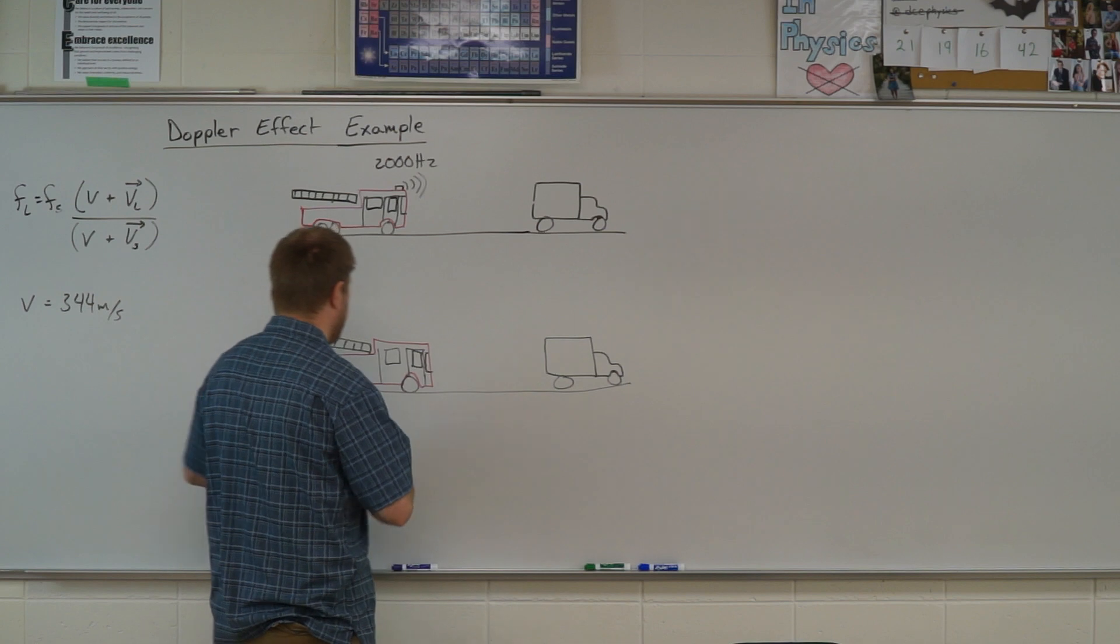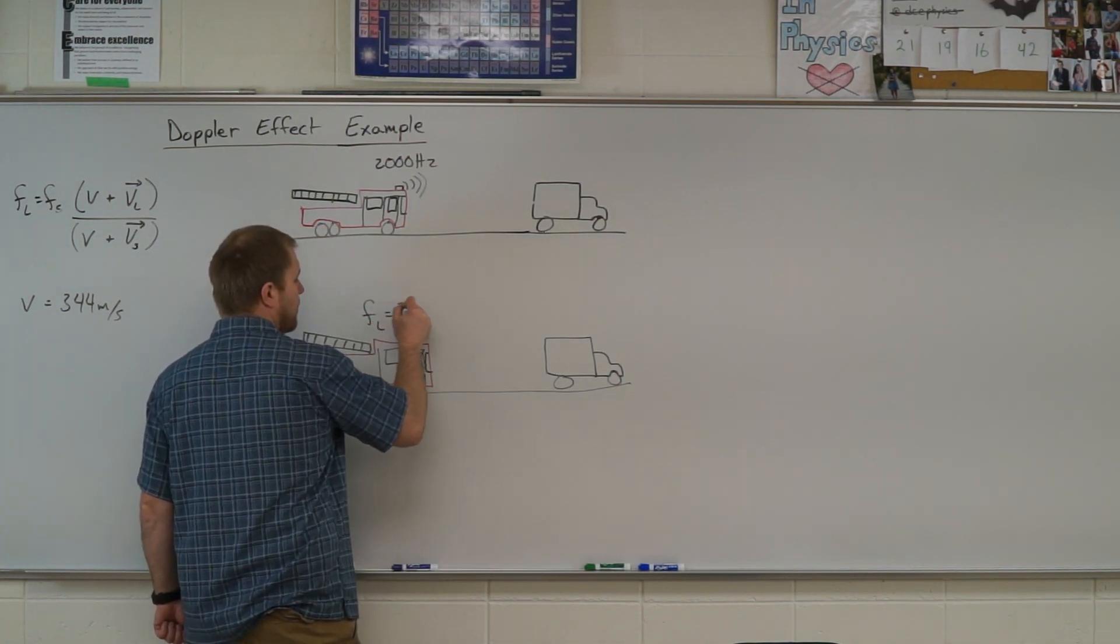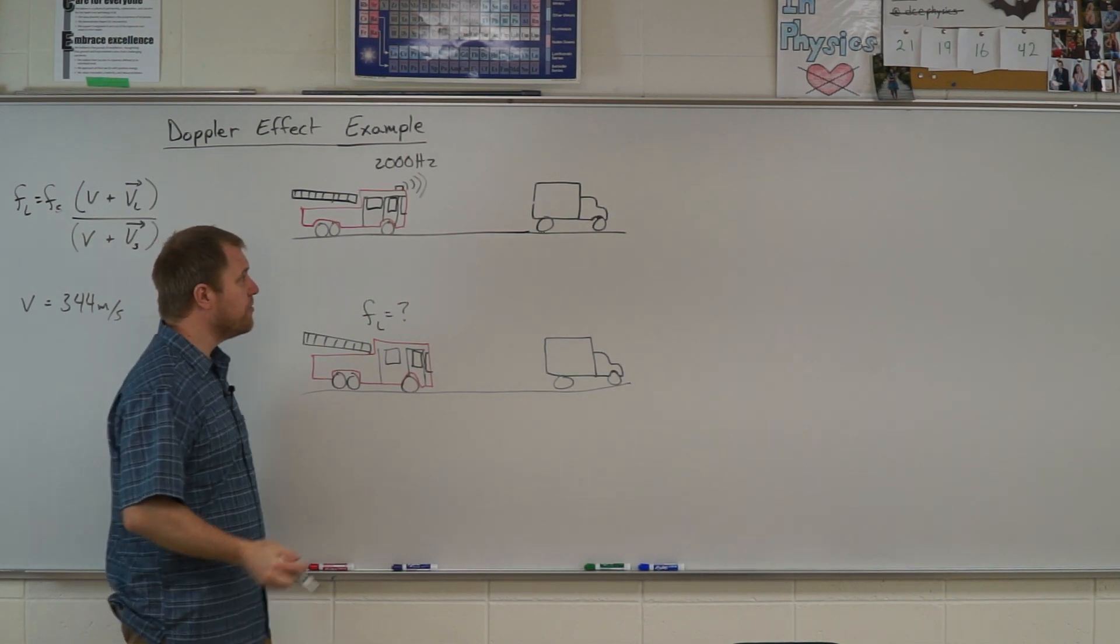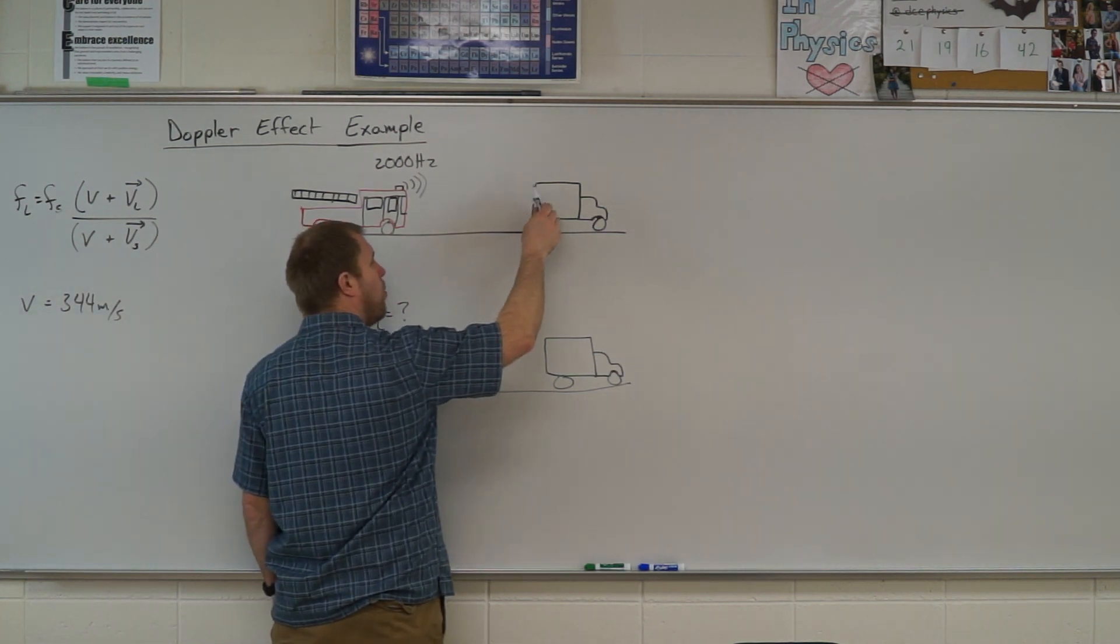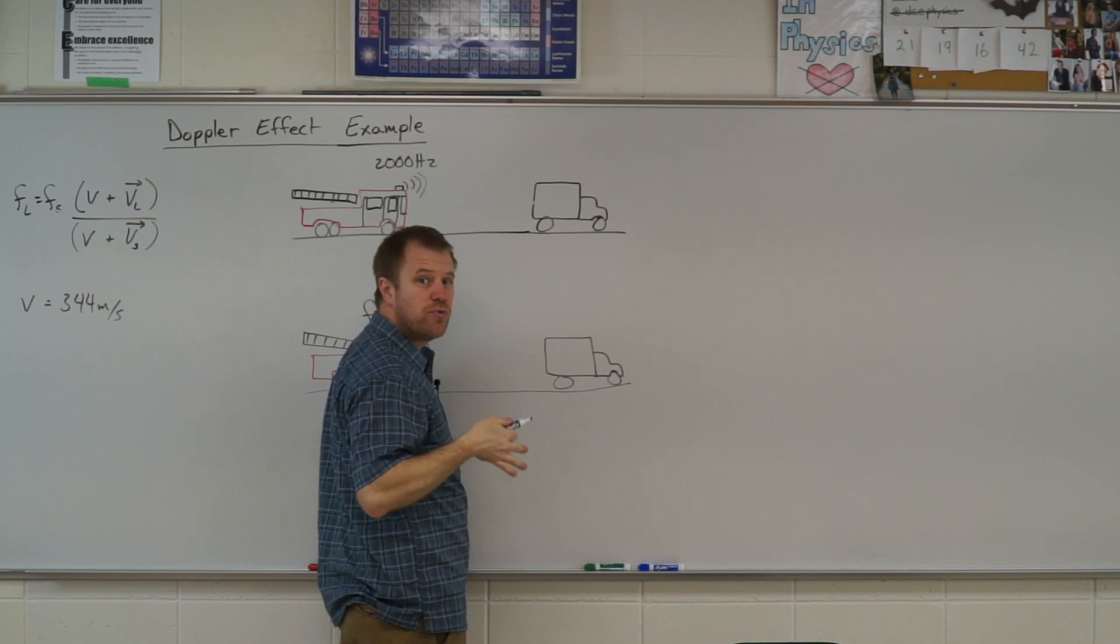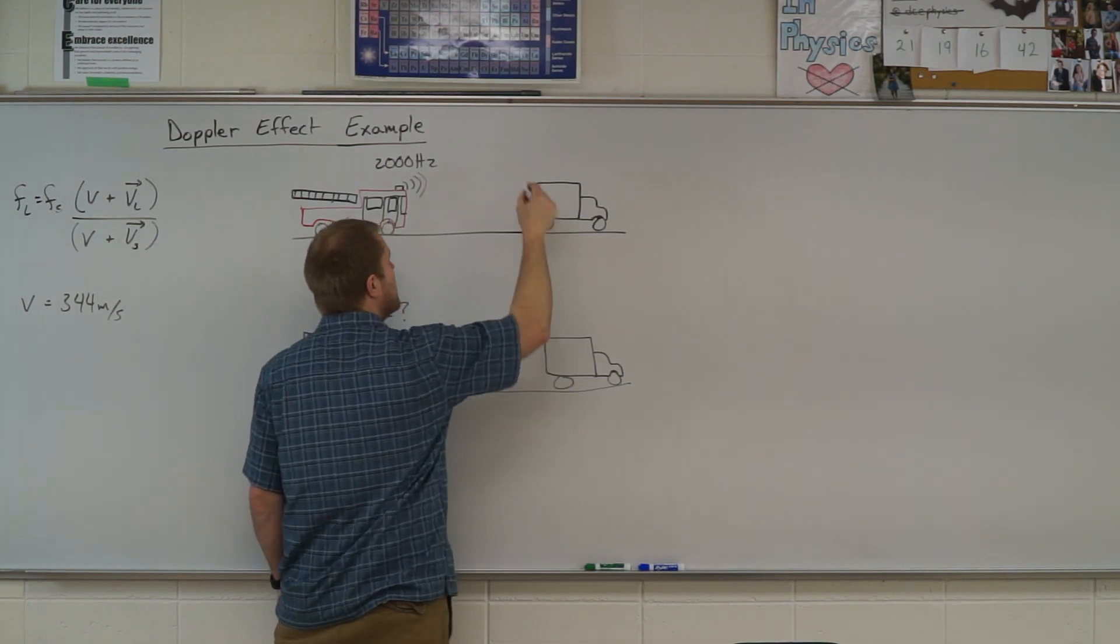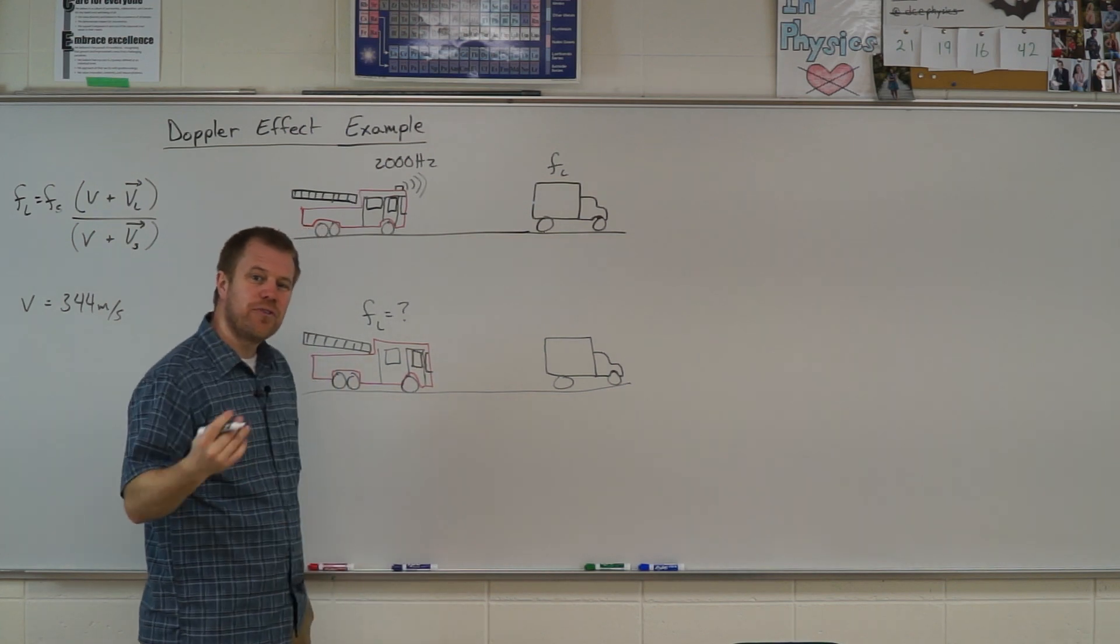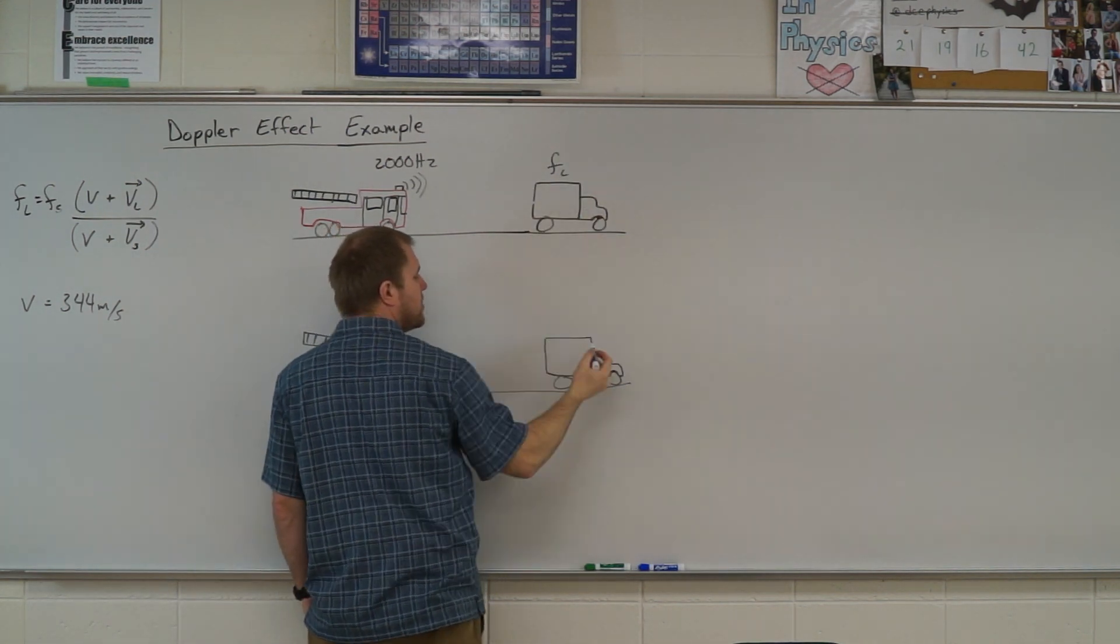So let's go ahead and grab our marker. This is what we're looking for, the frequency of the listener. So this is how we do a reflection problem. The first step is we need to figure out what the object that's going to reflect the sound hears. And that frequency that reflecting object hears is the frequency of the listener.